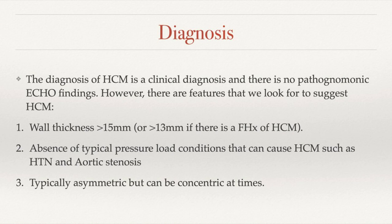Echo features that suggest hypertrophic cardiomyopathy include a wall thickness greater than 15 millimeters, or more than 13 if there's a family history of HCM, although most cases average around 20 millimeters. You want absence of typical pressure load conditions such as hypertension or aortic stenosis that can explain the hypertrophy — though these conditions can co-exist. The hypertrophy is typically asymmetric, but rarely can be concentric.